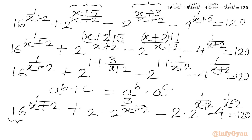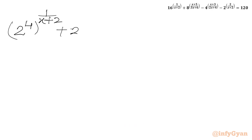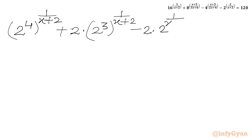Now we can write 16 as 2 power 4 and 4 as 2 power 2. So I will write our equation: (2 power 4) whole power (1 over x+2) plus 2 times 2 power (1 over x+2) cubed, minus 2 times (2 power (1 over x+2)) squared, equals to 120.